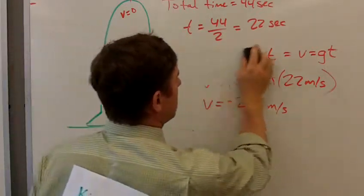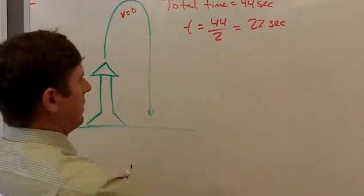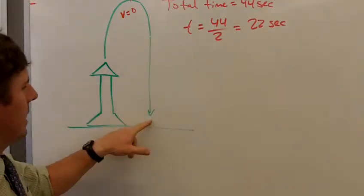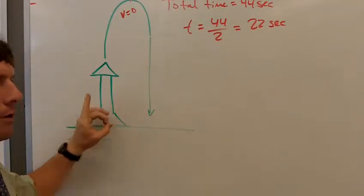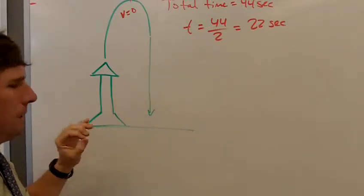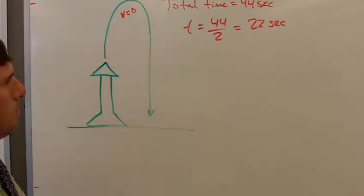But the next part of the question asks for what about the launching velocity? Well, if the landing velocity is negative 220 meters per second, that means the launching velocity has to be equal to that but in the opposite direction. So it should be positive 220 meters per second.